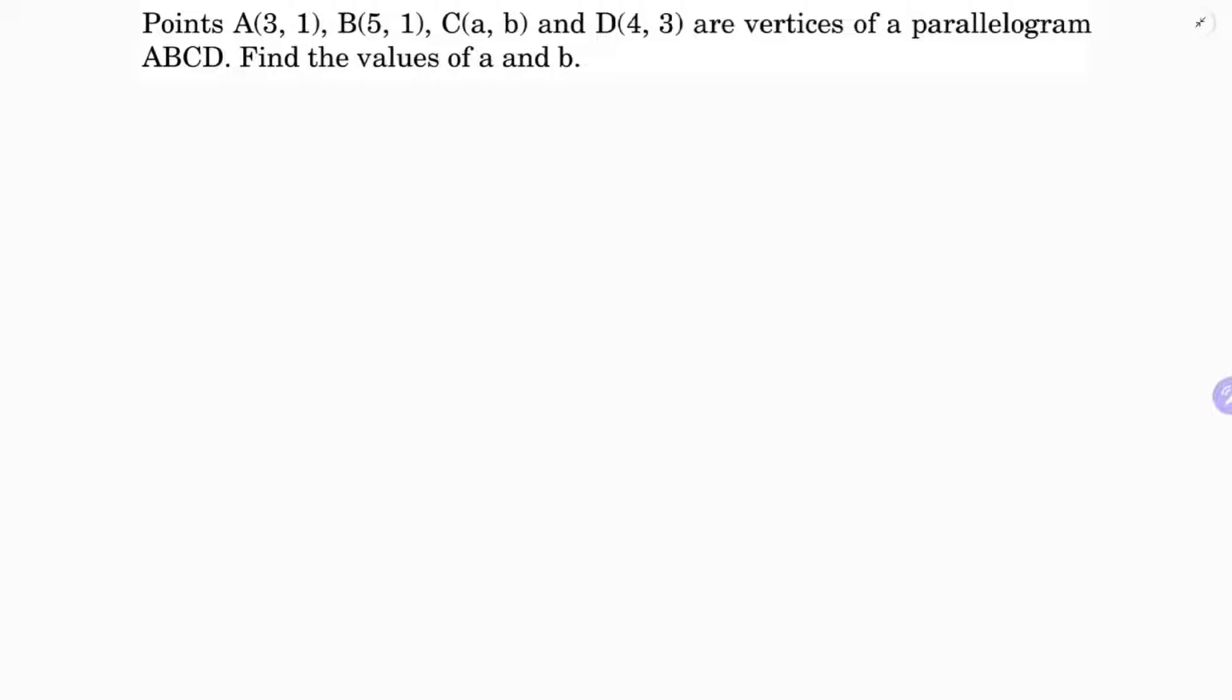So here the given parallelogram ABCD. A has coordinates 3, 1. B is 5, 1. C is a, b. And D is 4, 3.